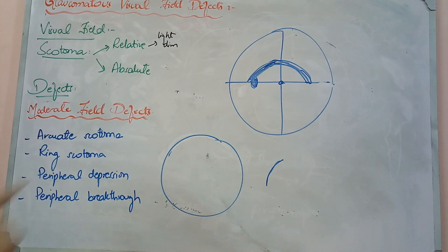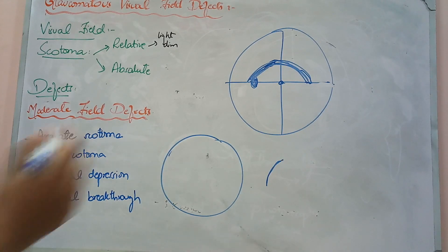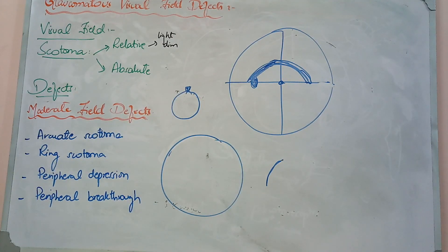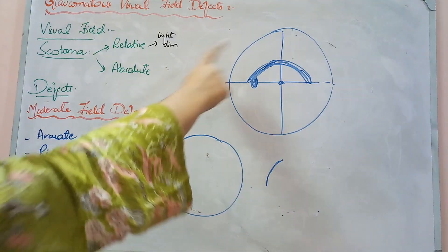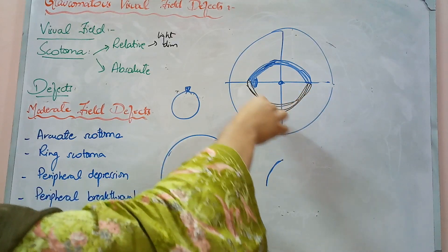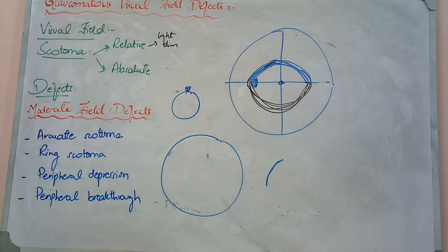Then we have ring scotoma. Arcuate scotoma's other name is Bjerrum's scotoma — it is called Bjerrum's scotoma, and this is the name used in MCQs. What is ring scotoma? If we have one arc made in arcuate scotoma above, and then the same arc is also made below — that is the extension of Bjerrum's — so this is the type of ring scotoma, in other words a double arc-like scotoma.